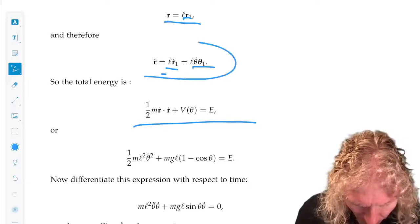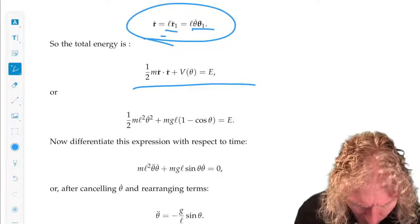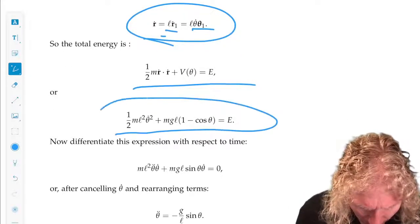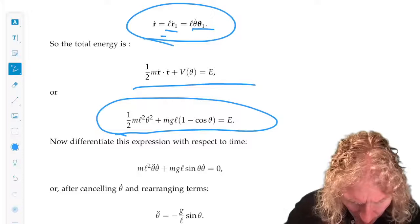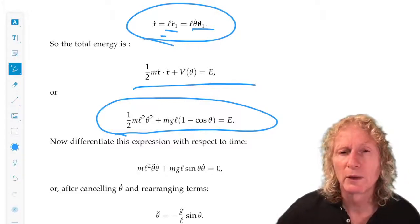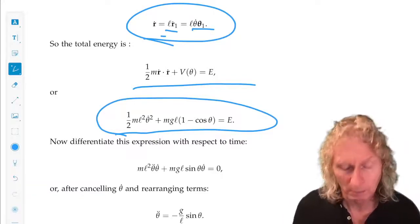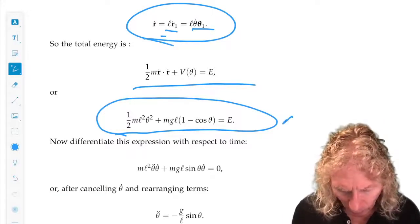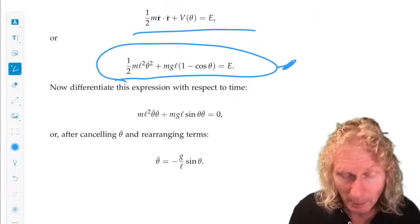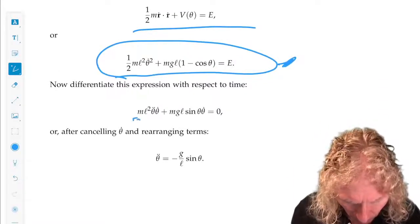So now the total energy is one half m R dot dot R dot. That's from this expression. So it's one half m L squared theta dot squared plus m GL, one minus cosine theta equals constant. We call it E. Now, we differentiate this expression with respect to time.